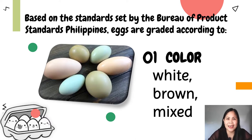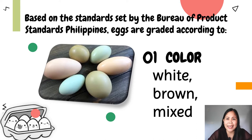Do the different colors impact the flavor or the health value of the eggs? Other than the appearance, there are no major differences between eggs from different breeds of chickens. The color of eggshells and egg yolks varies with the breed of hen and the food they eat, but this makes no difference to the food value.